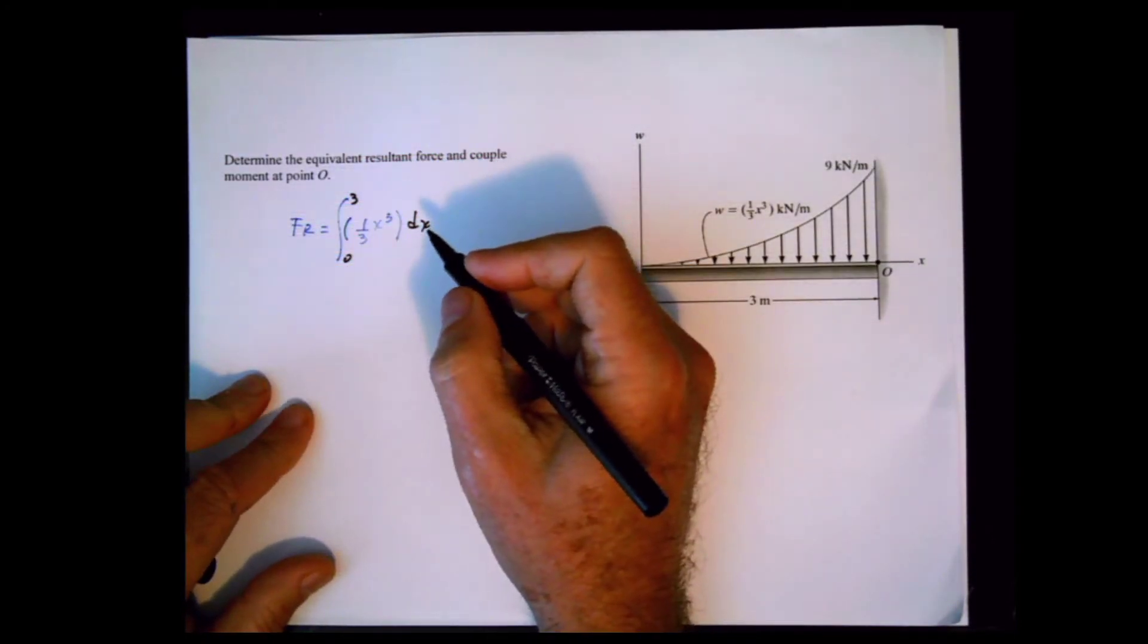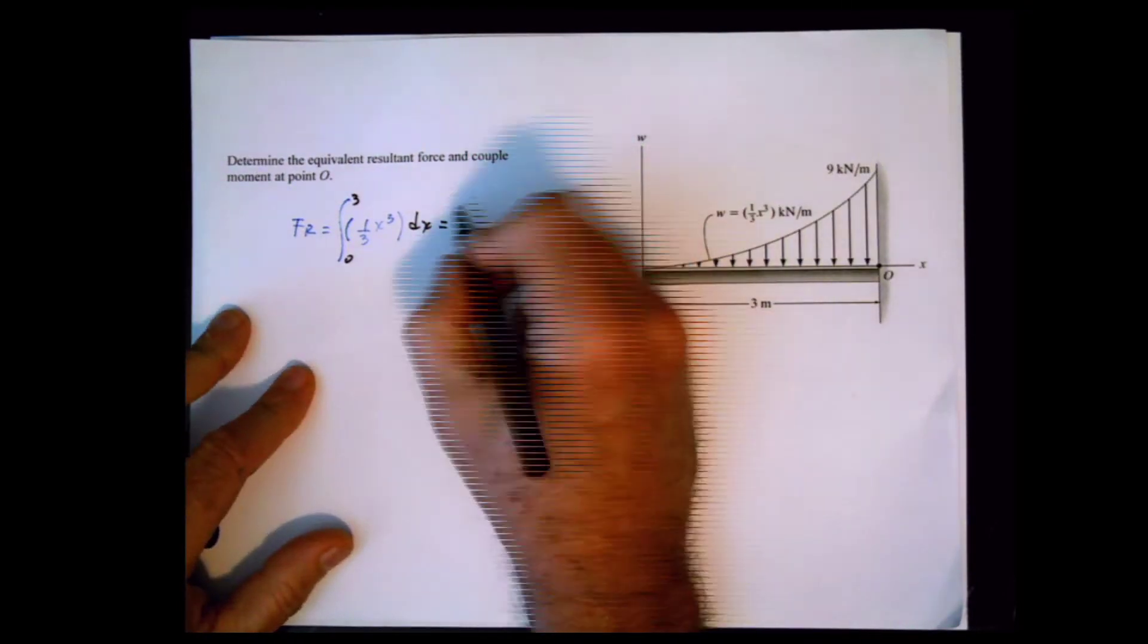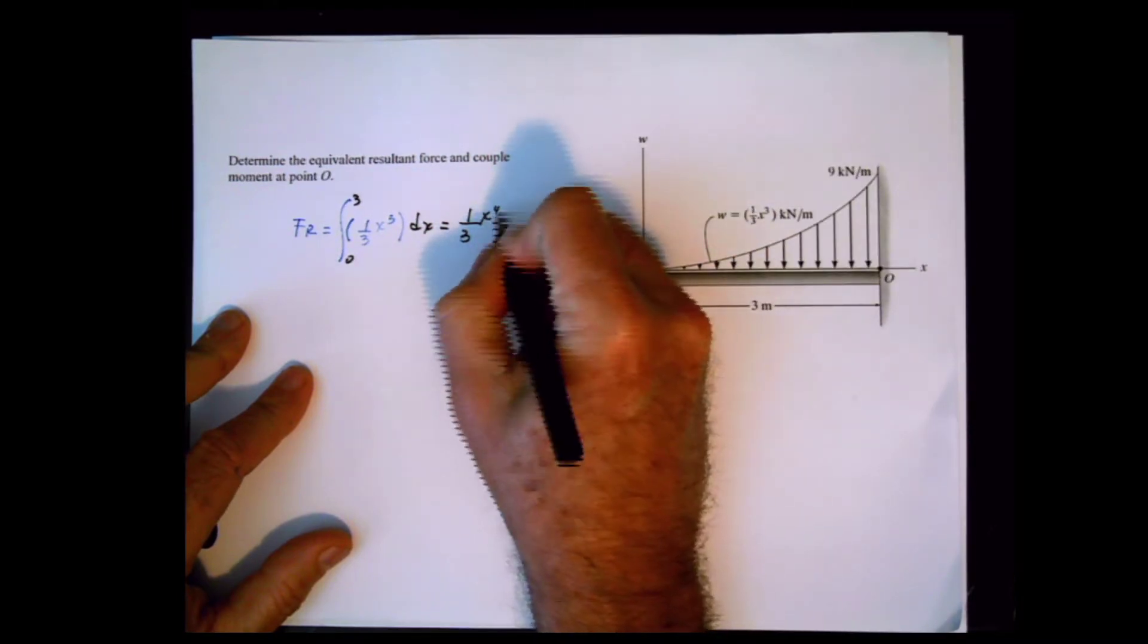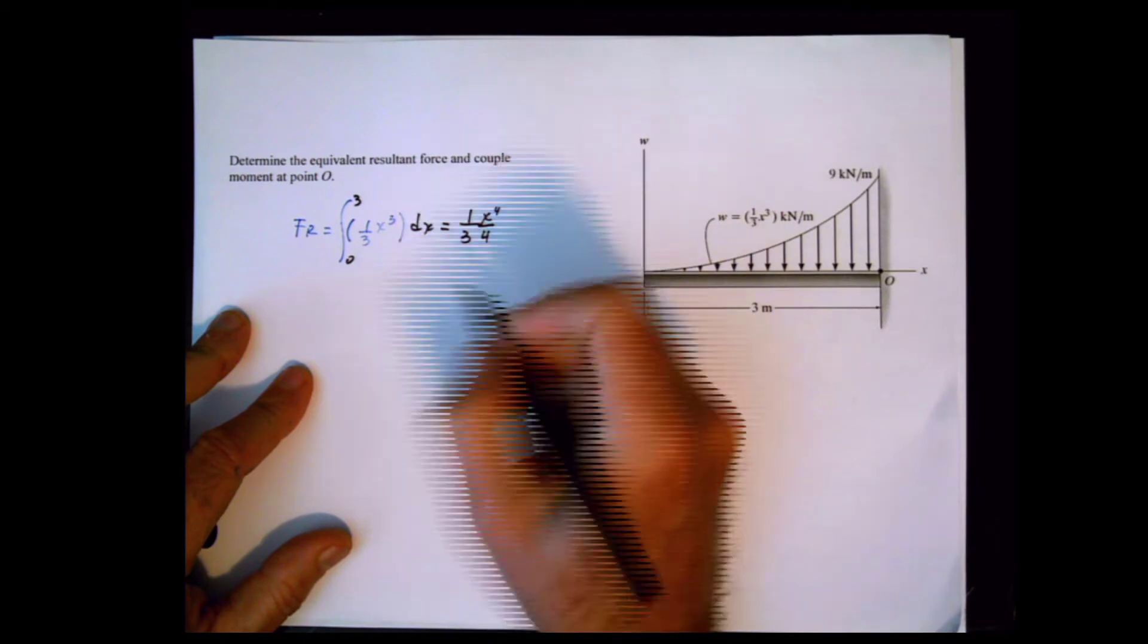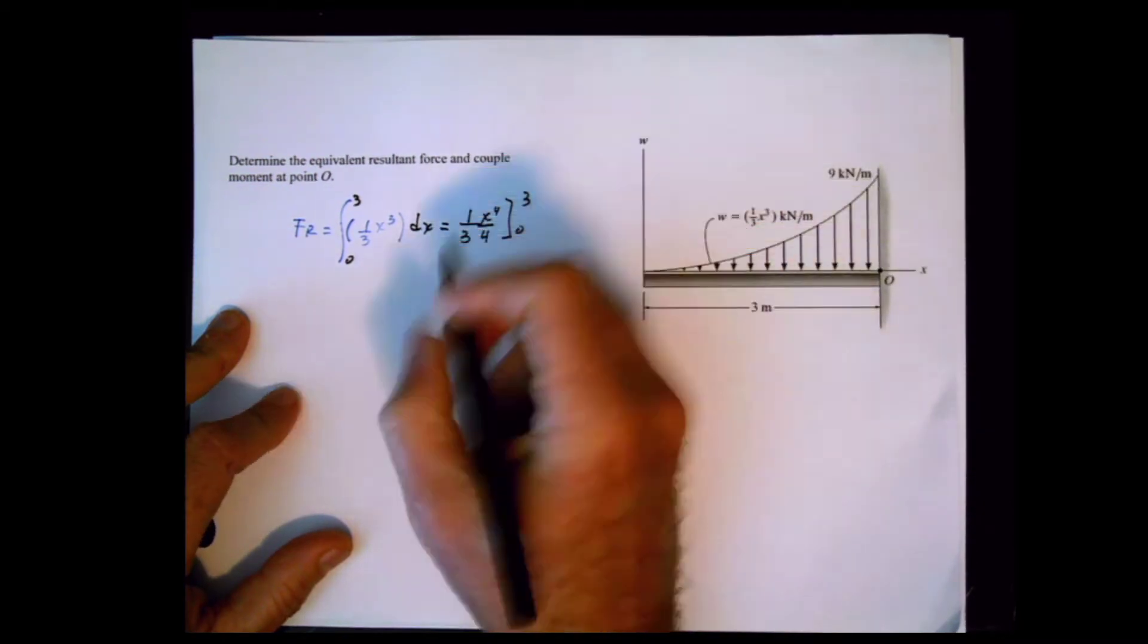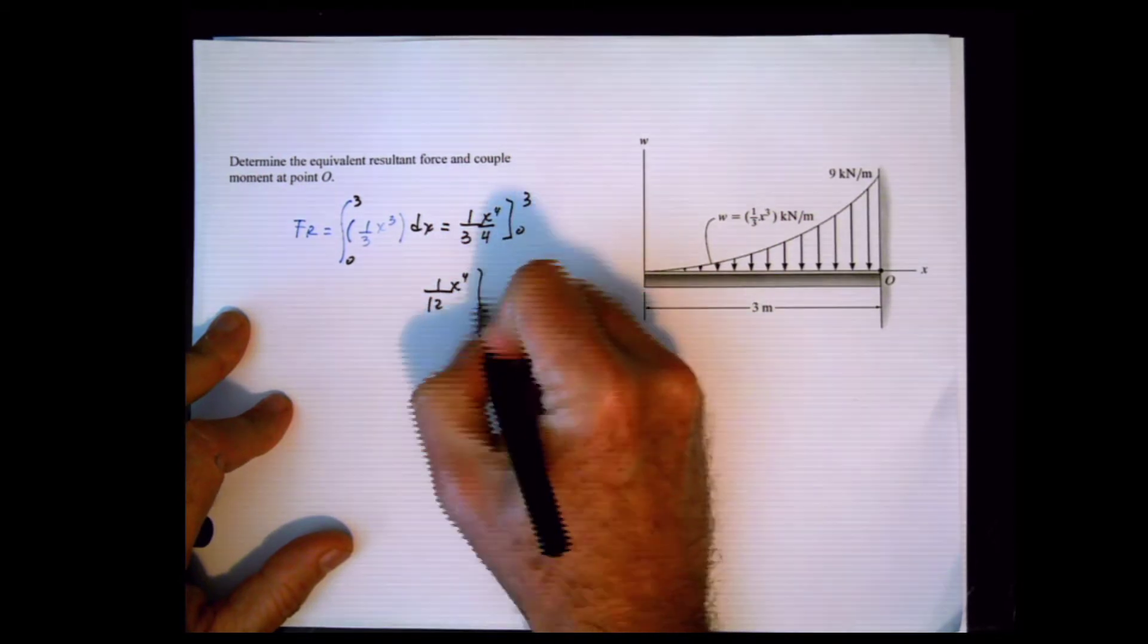By integrating, we get one-third x to the fourth divided by 4 between 0 and 3, or one over 12 x to the fourth from 0 to 3.